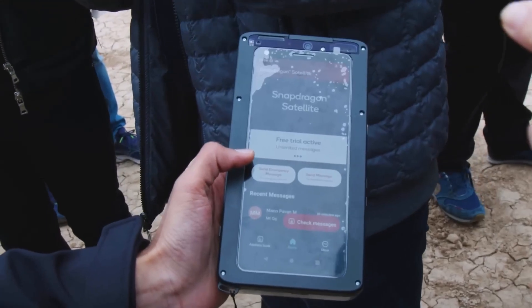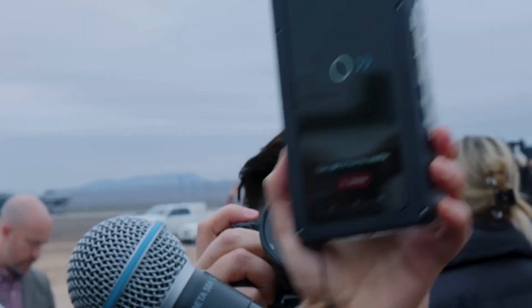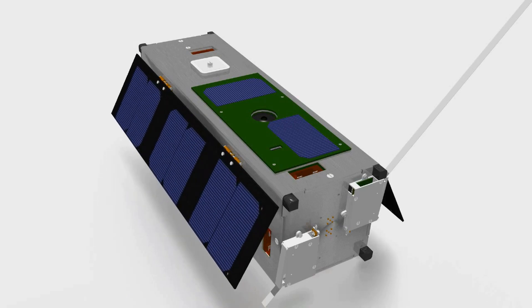It means that in places where there is no mobile coverage, handsets can connect with passing satellites to send and receive messages.